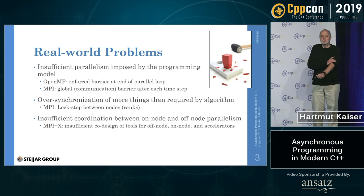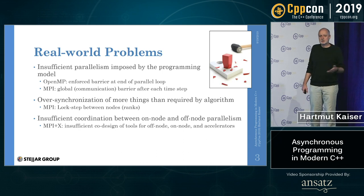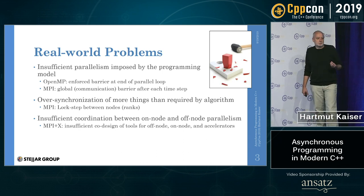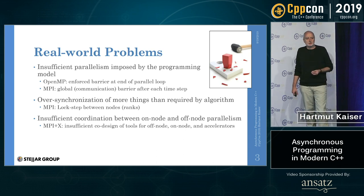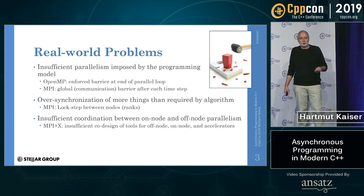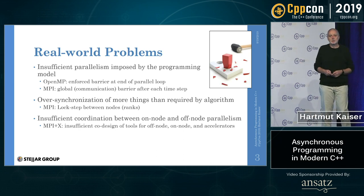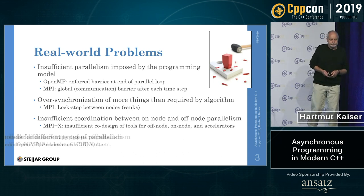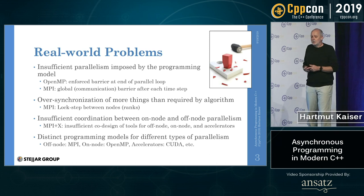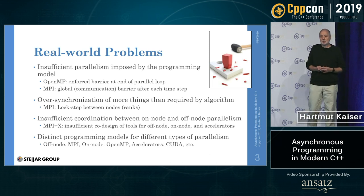We have insufficient coordination between on-node and off-node parallelism — and by off-node I also mean CUDA, GPUs, and other specialized hardware. Each type of parallelism has completely different tools, and the tool makers are barely talking to each other. Try doing an MPI call on an OpenMP thread — it will segfault right away. These different programming models don't integrate well. And we have very distinct programming models for different types of parallelism: CUDA, OpenMP, MPI, and so on.